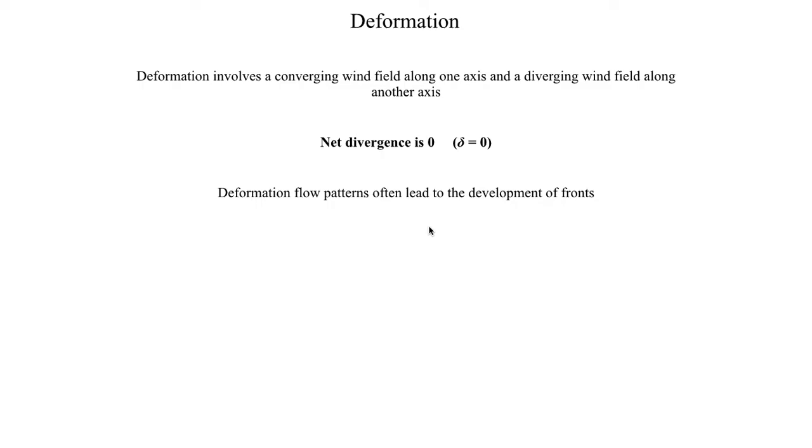And there's actually two mathematical parameters to quantify the amount of deformation that's present in the atmosphere. One is this parameter called stretching deformation, defined as d1 and that's equal to du/dx minus dv/dy. And at first glance this might look a lot like the equation we had for delta, that is our horizontal divergence term, except here we have a negative sign instead of a positive sign. So it's basically divergence with a negative sign instead of a positive sign. And then this other one is called shearing deformation, usually given as d subscript 2 and that's equal to dv/dx plus du/dy.